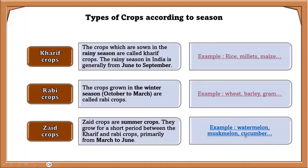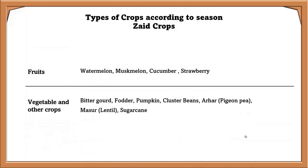Zaid crop examples include fruits like watermelon, muskmelon, cucumber, and strawberry. Vegetables and other crops include bitter gourd, fodder, pumpkin, cluster bean, ahar, pigeon pea, masur, lentil, and sugarcane.